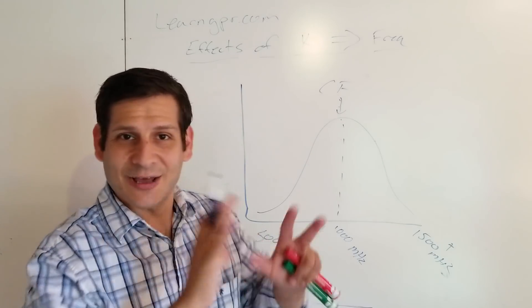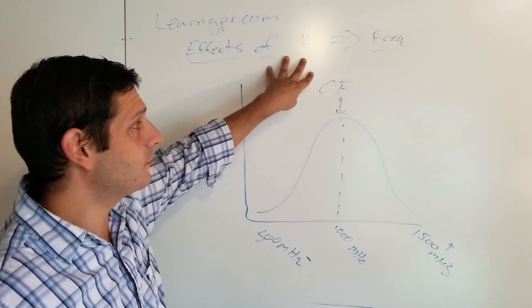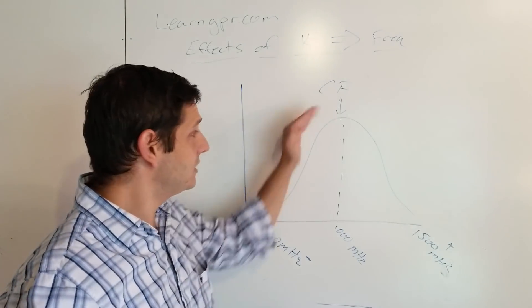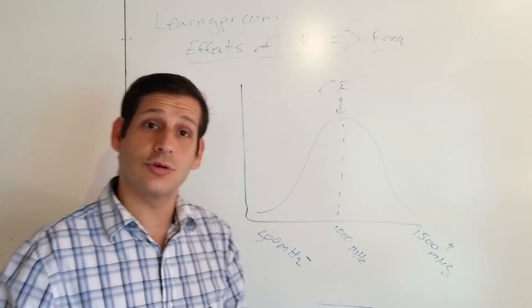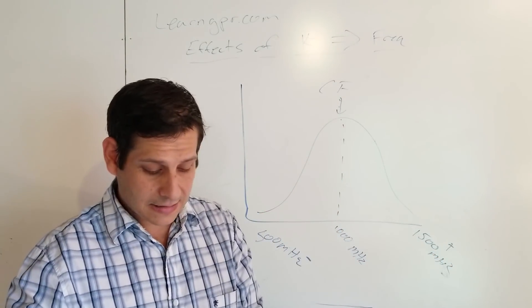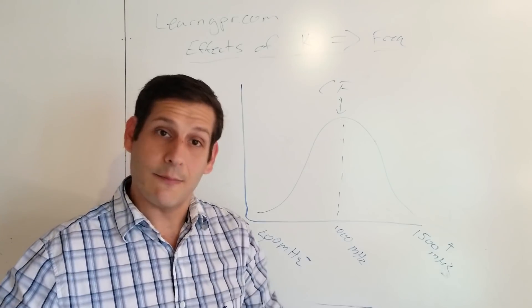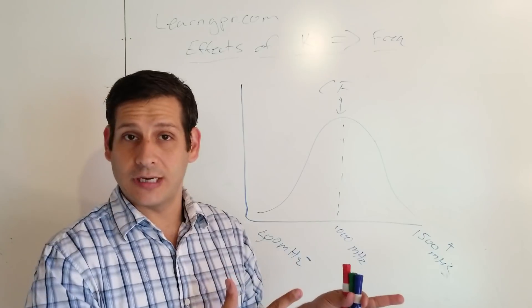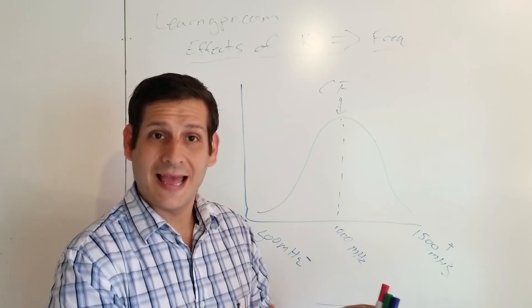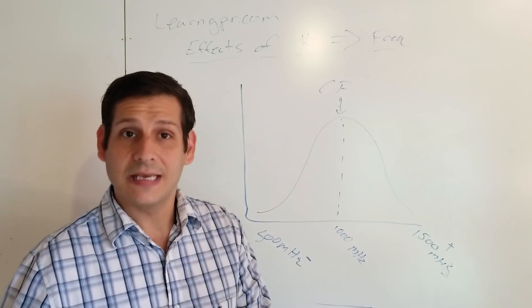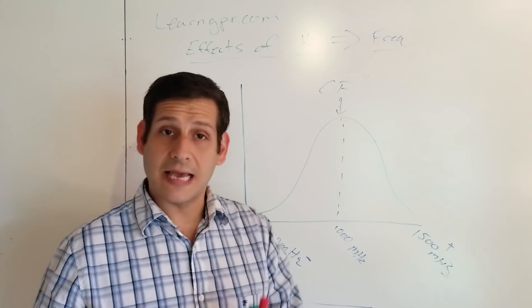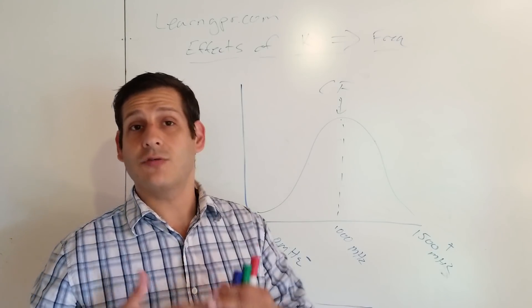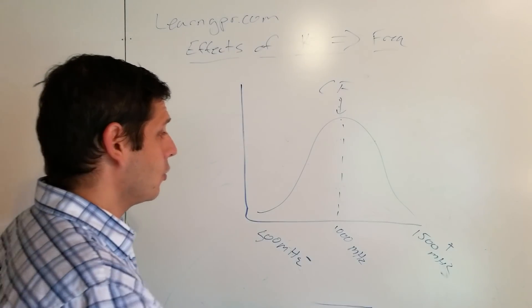Now that we set all that up, what's the effect of permittivity on this distribution? What Mike was able to articulate to me and to the class was that there is a downshift in frequency as there's an increase in permittivity. A downshift in frequency as there's an increase in permittivity.